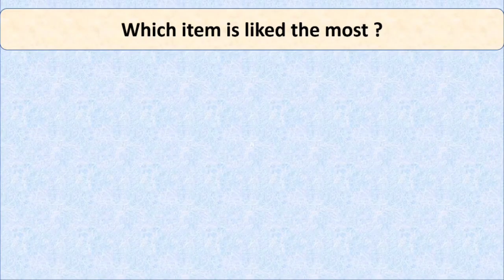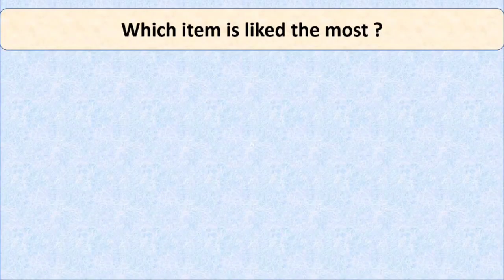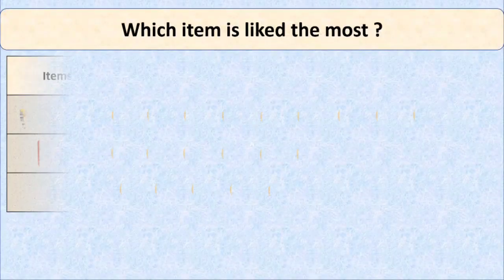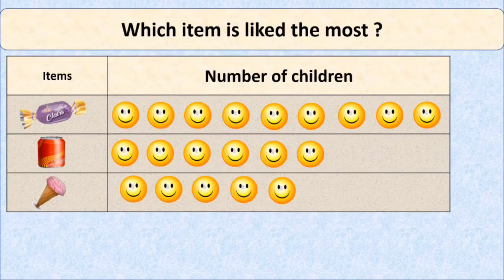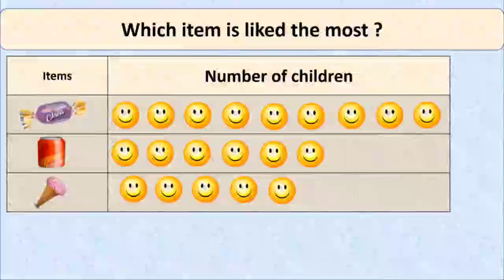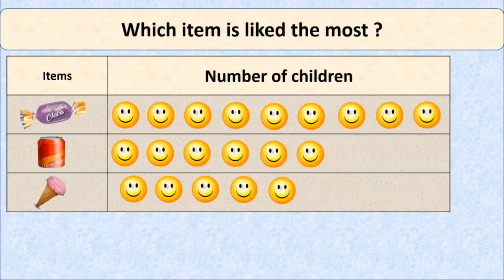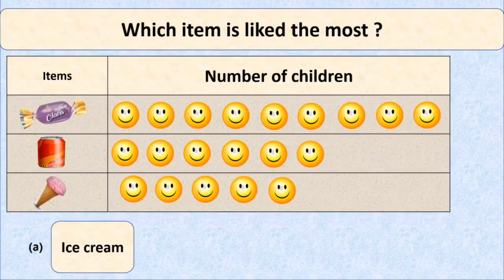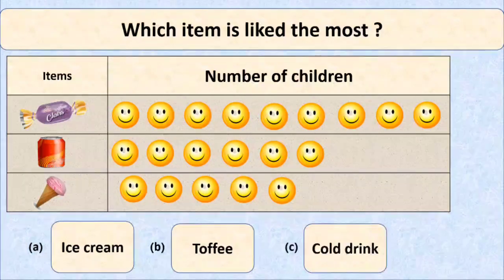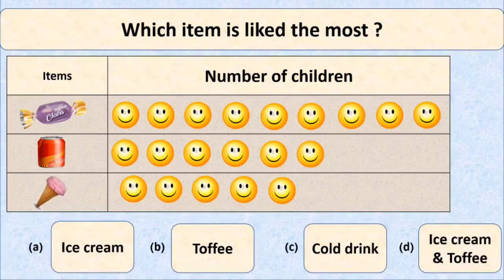Which item is liked the most? Here you can see pictures of toffee, cold drink can, and ice cream cone in the first column, and in the second column the number of children who like that item is given. The four options are: option A is ice cream cone, option B is toffee, option C is cold drink, and option D is ice cream and toffee both.